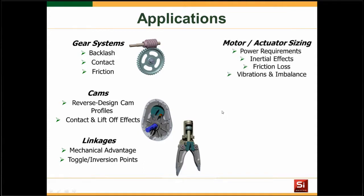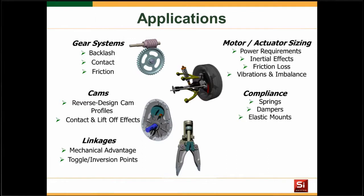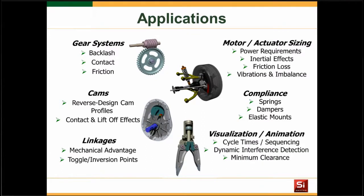Motor and actuator sizing — determining power and torque requirements to cycle a mechanism, including the effect of friction, to understand the difference with and without it. Compliance features such as springs, dampers, and elastic mounts. And finally, visualization and animation — a great sales and marketing tool for creating photorealistic images and animations, as well as using minimum clearance and dimensional tools to visualize what's happening throughout a simulation.